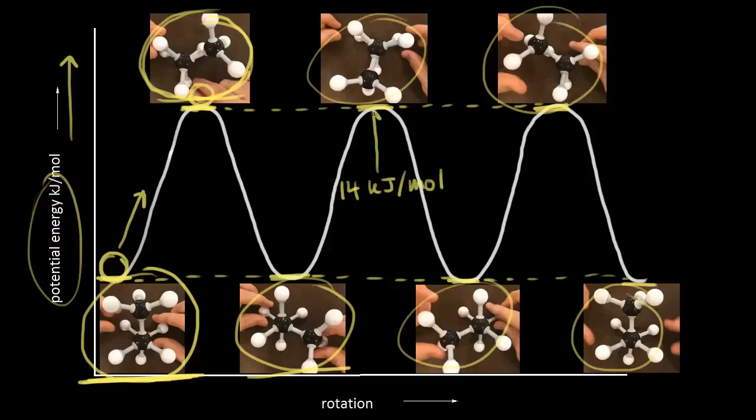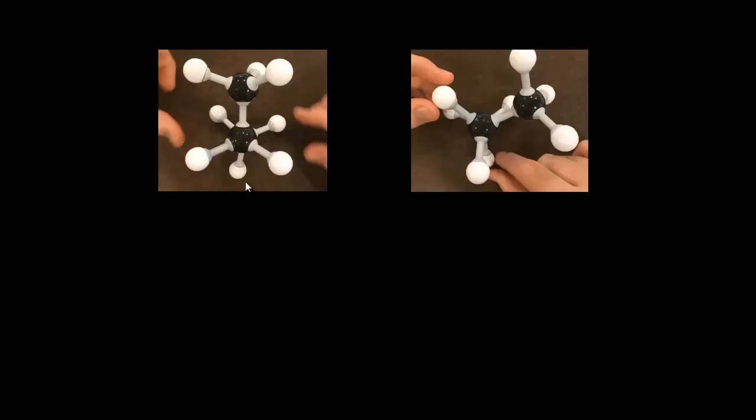So we're talking about the energy difference between the eclipsed and the staggered conformations — 14 kilojoules per mole between the staggered conformation of propane and the eclipsed conformation. That's called the torsional strain. Let's go ahead and draw a Newman projection for each one of these conformations, starting with the staggered conformation.